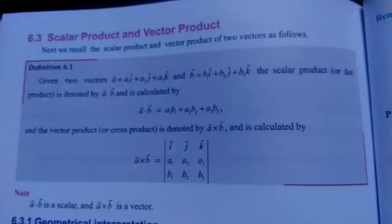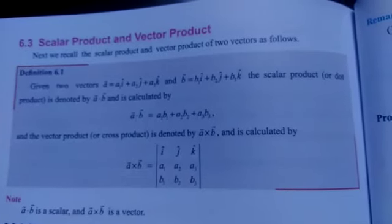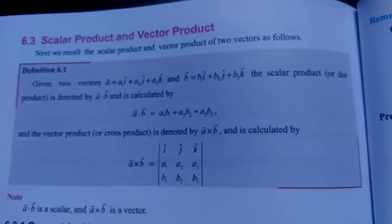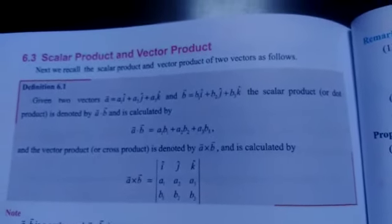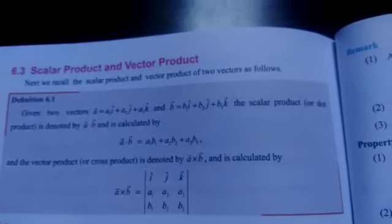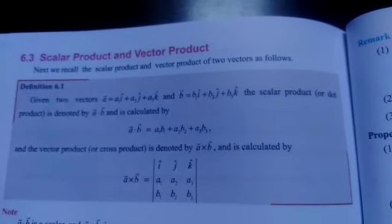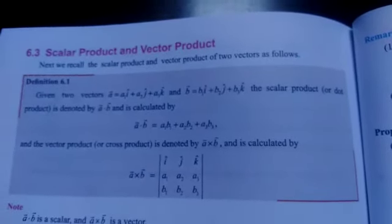You already know this dot product: î·î = 1, ĵ·ĵ = 1, k̂·k̂ = 1. Other than these, î·ĵ, ĵ·k̂, k̂·î are all equal to 0. So we get a·b = a1b1 + a2b2 + a3b3.